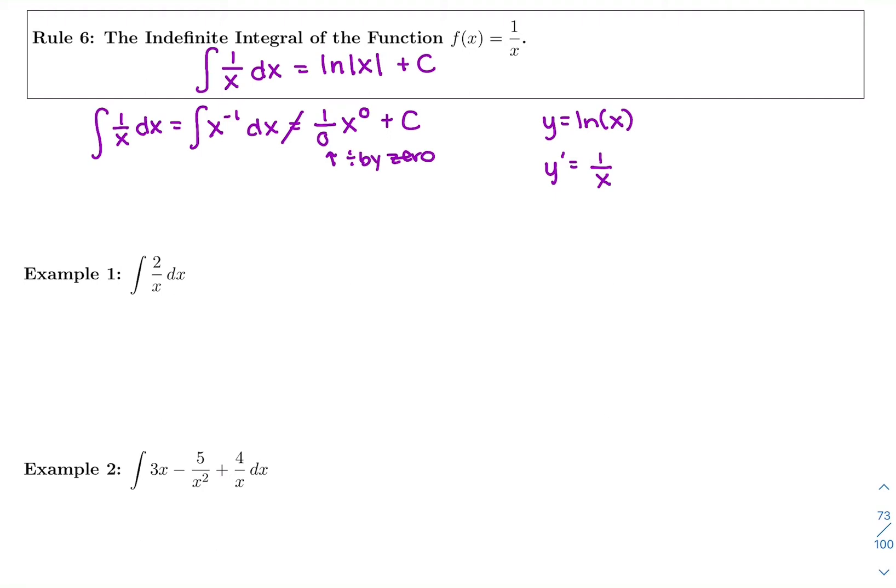So looking at this first example, I have 2 over x. In autopilot, I would say, my first step is to rewrite this. I have 2x to the negative 1 dx, which means with respect to x. And then I'm going to keep the constant multiple 2, add 1, put it in the bottom, put it up top. So negative 1 plus 1 is 0. So I'd have 2 divided by 0, x to the 0.